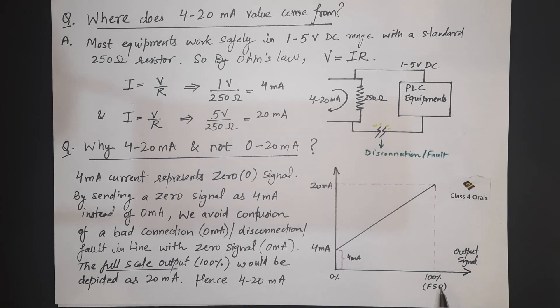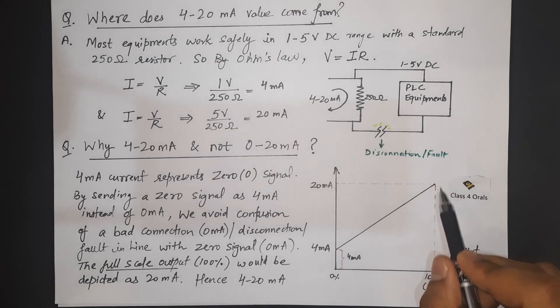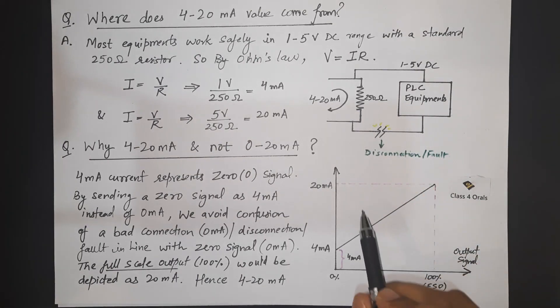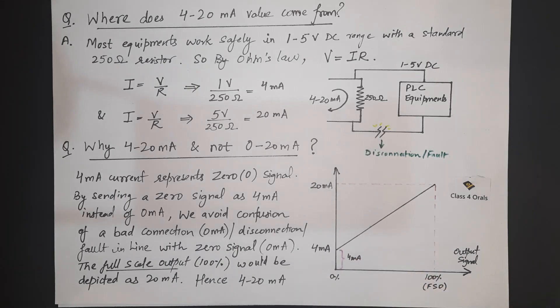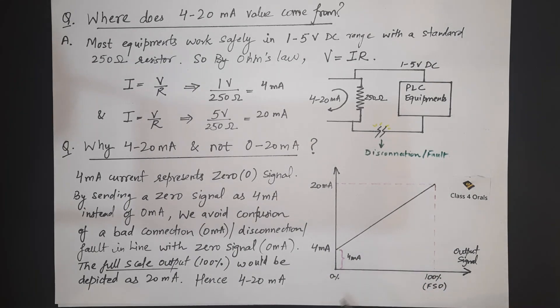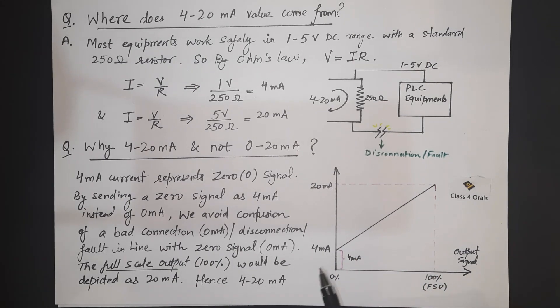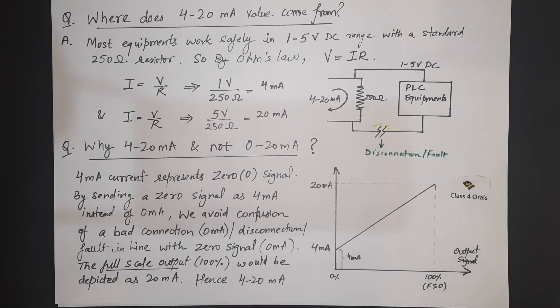And if there is 100% of the output has come to here that means it will give 20 mA. Simple. This is why we are focusing on no signal with 4 mA and 100% of full scale output with 20 mA.